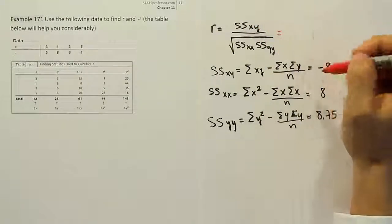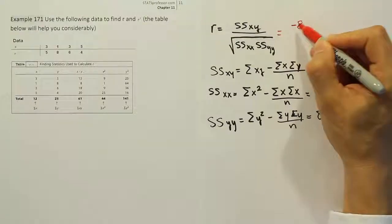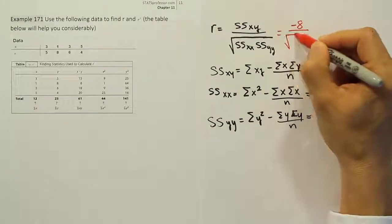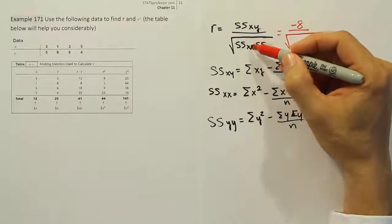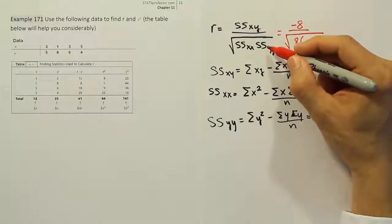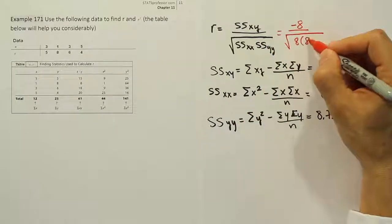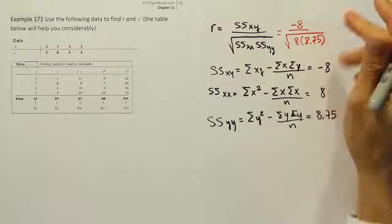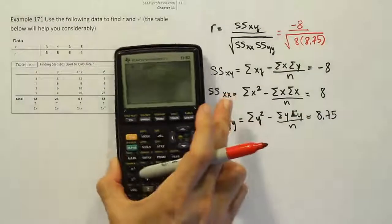So, SSxy will be negative 8 divided by the square root of SSxx, which is 8, times SSyy, which is 8.75. Let's work that out in the calculator and see what it gives us.